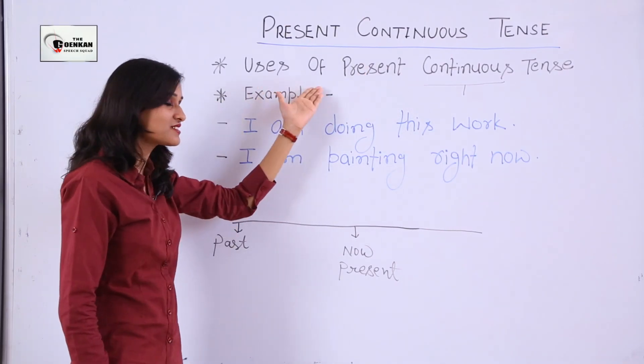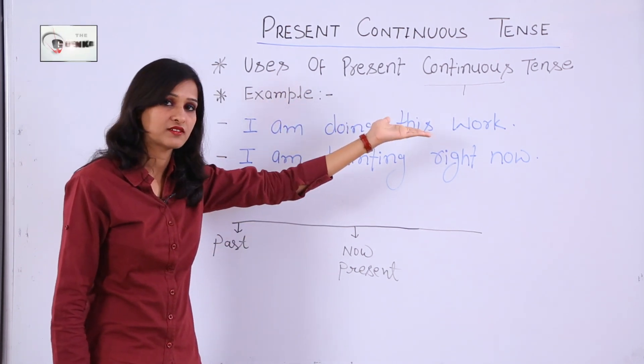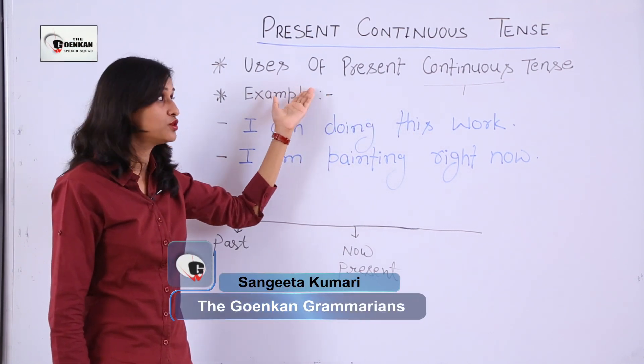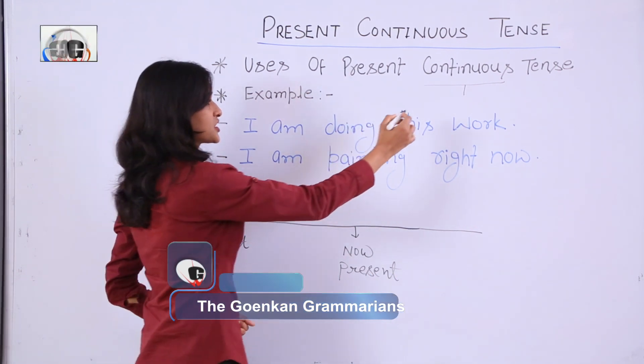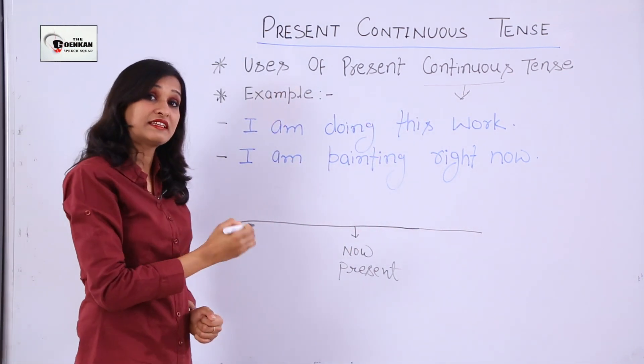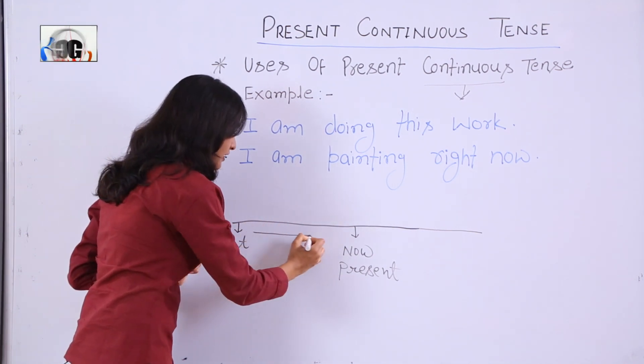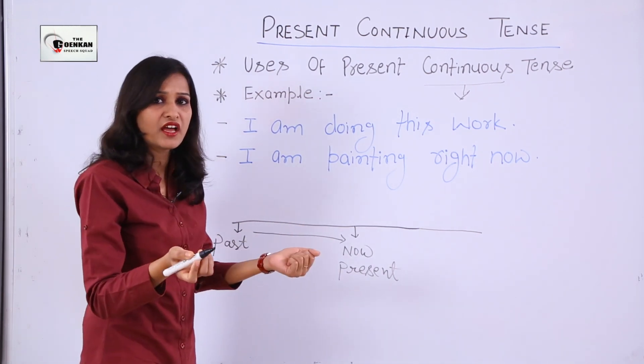First of all, we will see when we use present continuous tense. As the name itself indicates, continuous means that the action or incident which took place in the past is still in the present, and we don't know when it will end.